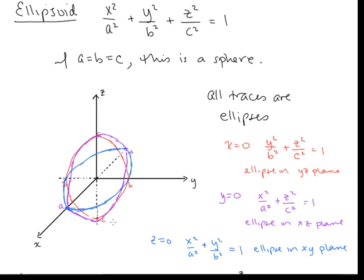We can certainly put some more traces in as well. For example, if we do some more horizontal traces where z equals a constant, we would still get ellipses in those z planes. And that's our sketch of the ellipsoid.